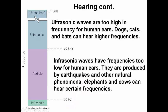When we think about hearing, there is a frequency range — much like there is a frequency range for light. Ultrasonic waves are too high in frequency for human ears. The human hearing range is between 20 Hz and 20 kHz. Above that, dogs, cats, and bats can hear because they have a different ear construction and can detect a different range of frequencies.